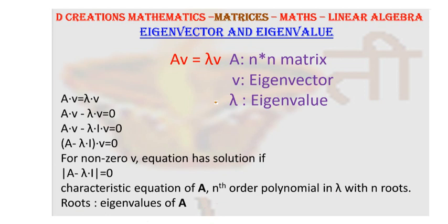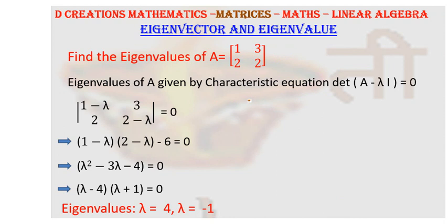Now in order to understand it better, we will take a numerical example. Let us take the matrix A where the elements in row 1 are 1, 3, and elements in row 2 are 2, 2.